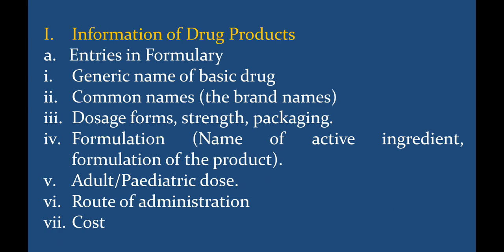Whatever medication is included in the hospital formulary is selected on the basis of official pharmacopoeias like the Indian Pharmacopoeia, British Pharmacopoeia, USP, or different types of national formularies. Whatever preparations or selected drugs are listed in these books, you include them in the formulary. You don't include any other medications or drugs. There are some medications required to be included in the formulary, and it depends on what type of disease you need to address.